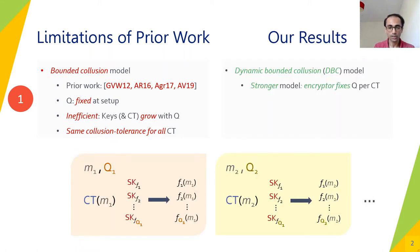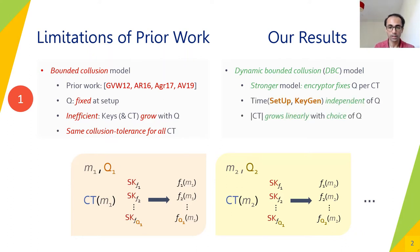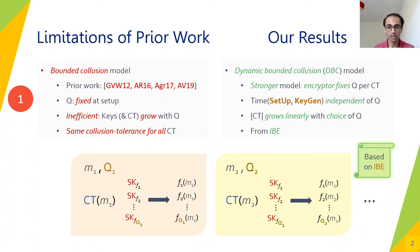In this context, we introduce the notion of the dynamic bounded collusion model. It is a stronger model where the encryptor gets to fix the collusion bound per ciphertext, depending on the sensitivity of the underlying plaintext. As a consequence, the runtime for setup and key generation becomes independent of the collusion bound Q, and ciphertexts in our scheme grow linearly with the choice of that particular Q. We show that FE in this stronger dynamic bounded collusion model can be built generically from identity-based encryption schemes, and also from LWE with stronger properties.